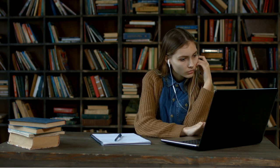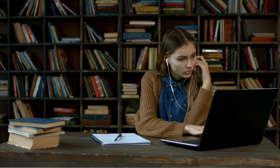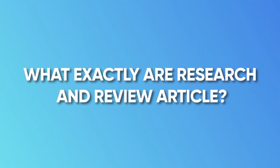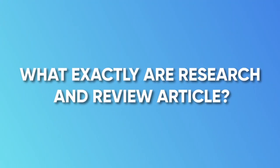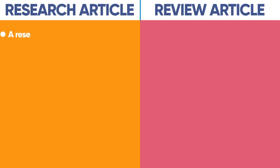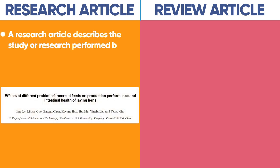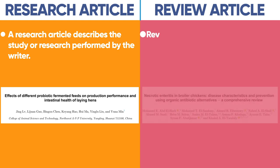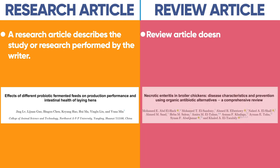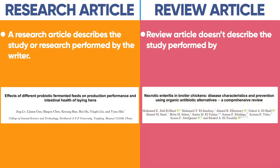Alright, let's begin. What exactly are research and review articles? A research article describes the study or research performed by the writer, whereas a review article does not describe the study performed by the writer. Instead, it provides an overview of a topic by summarizing previously published articles.